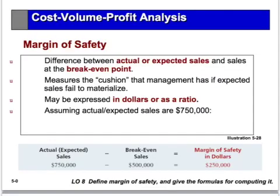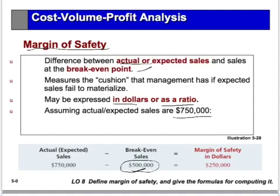The margin of safety is the cushion — the actual sales a company is doing over and above what it needs to break even. It can be expressed in dollars or as a ratio. For example, if actual sales are $750,000 and break-even is $500,000, the margin of safety is $250,000 — meaning sales can drop by $250,000 before the company goes into a loss.